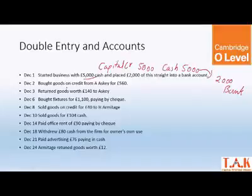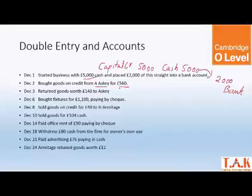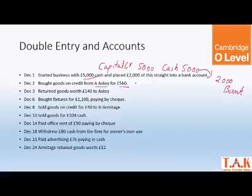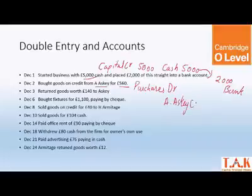First entry: bought goods on credit from ASK for £560. Anzala, what is the entry? Second December — purchases debit and ASK will be credited.